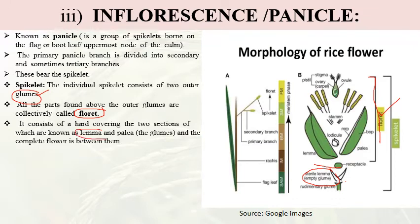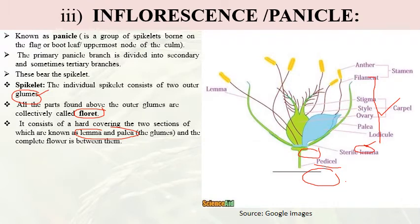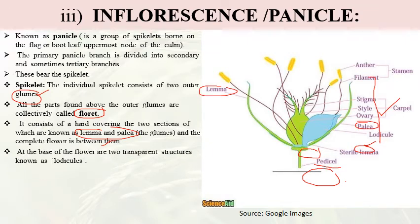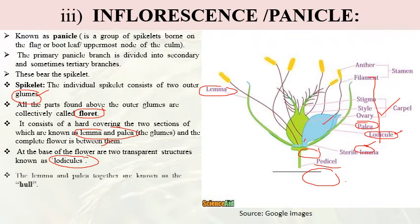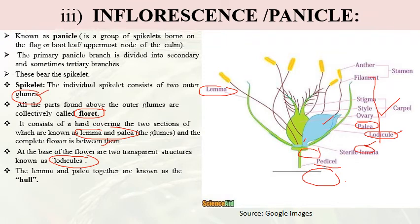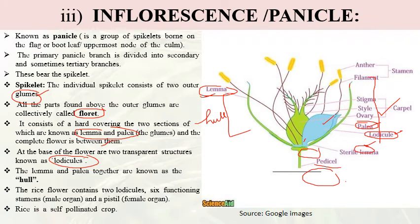The floret consists of a hard covering of two sections known as lemma and palea. The complete floral parts are enclosed between them. At the base of the flower are two transparent structures called lodicules. Lemma and palea together are known as the hull. The rice flower contains two lodicules, six functioning stamens as the male sex organs, and a pistil as the female sex organ. Rice is a self-pollinating crop.